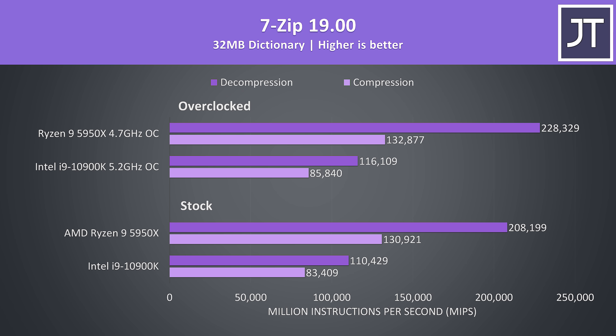7-Zip was used to test compression and decompression speeds, and this is typically a workload where Ryzen has an edge over Intel, and that was definitely the case here. Whether overclocked or at stock, the decompression speed was the biggest difference out of everything tested. The difference was over 90% with both overclocked, while compression still had a decent 55% boost with Ryzen.